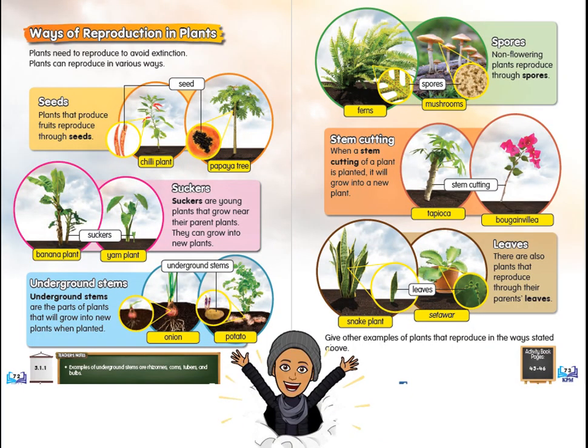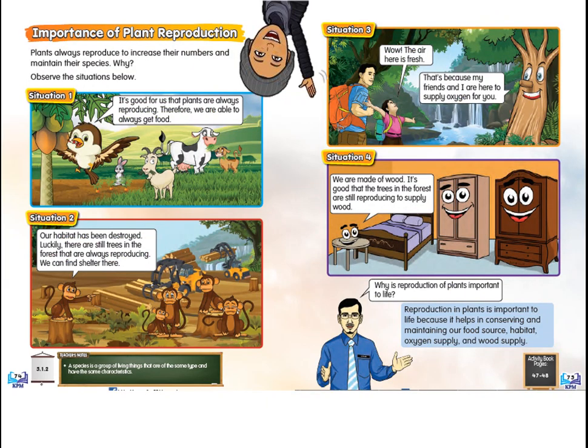This is the most important part of this topic that I really hope you still remember. There are six ways of reproduction in plants — I really hope you remember them all, and also the types of plants for each way.